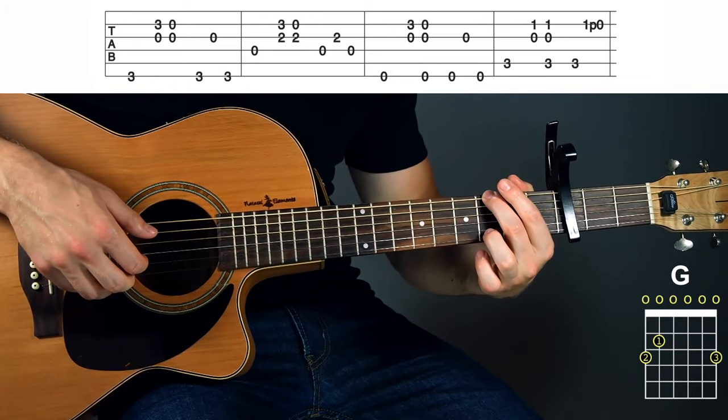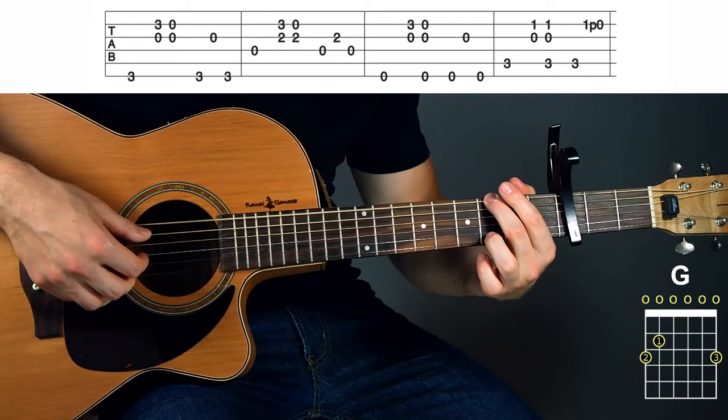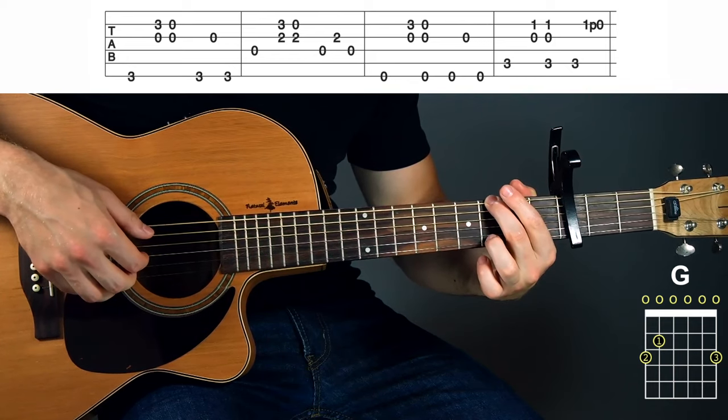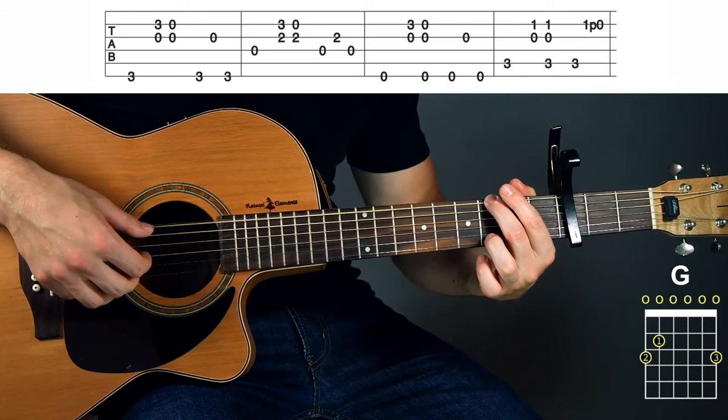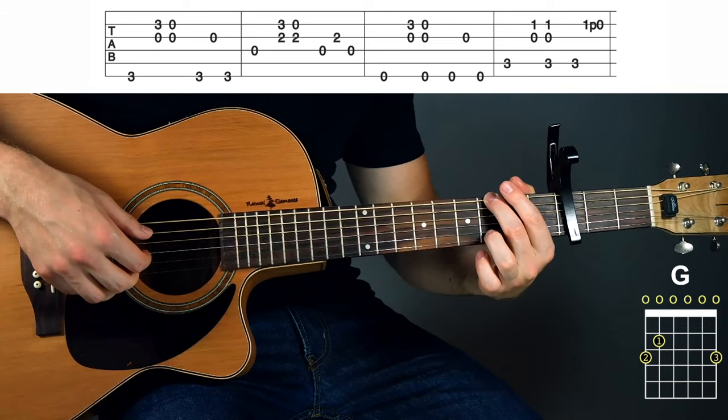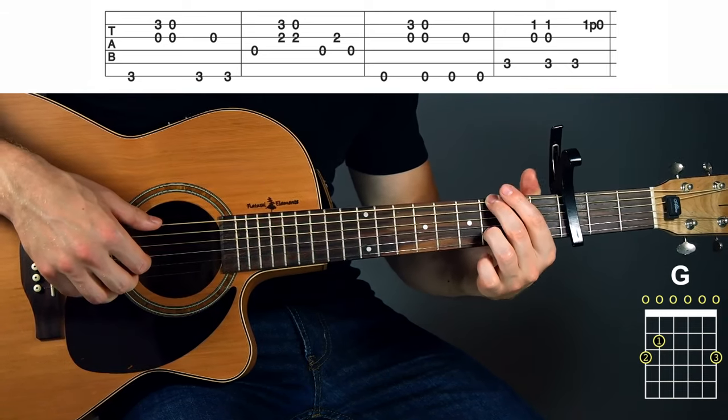And then you're going to finish off with the 6th string, then the 3rd string, then the 6th string again. So that whole section slow together is going to look like this.